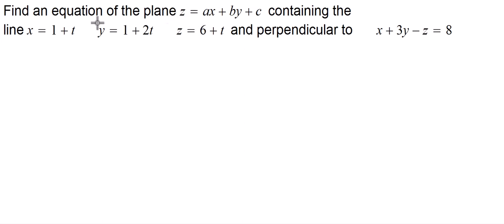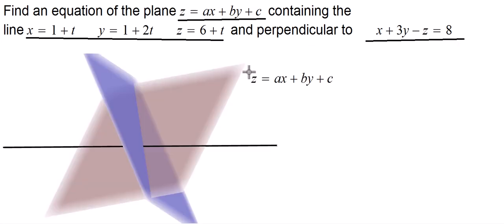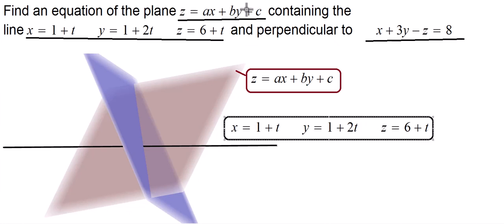We would like to find the equation of the plane that contains this line — given by the equation written here — and is perpendicular to the plane with this equation. This is the plane that we would like, shown here in brown. Here is the equation of the line that this plane contains, and the plane has to be perpendicular to this blue plane right here.